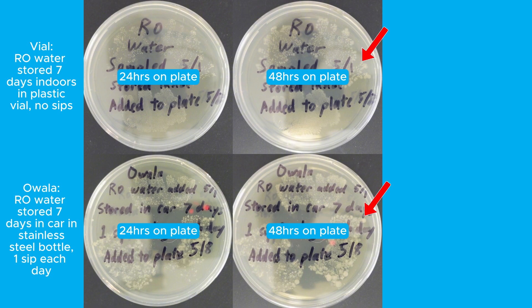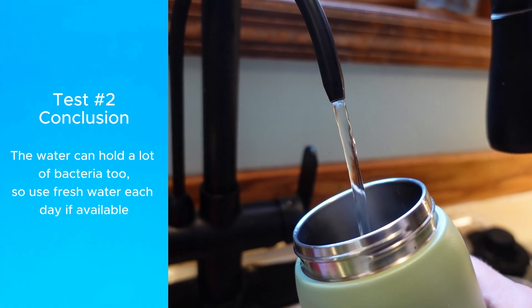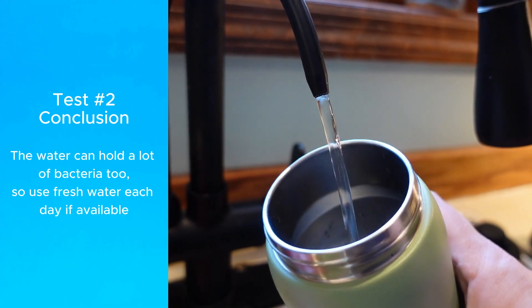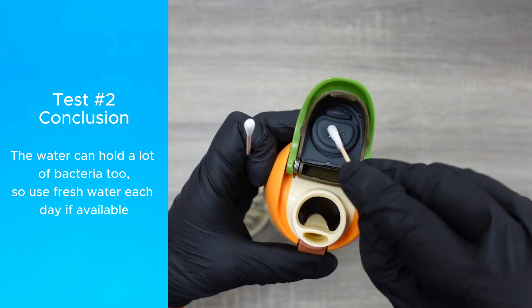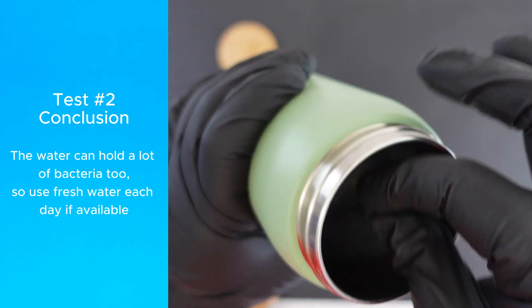After two days, the colonies on both samples had grown even more, but the Owalla was still a lot worse. Interestingly, on day three, they kind of look similar to how they did on day two, but the main takeaway is that the Owalla sample was always worse. This is why it's also a good idea to refill your bottle with fresh, clean water every day if you can, because it's not just the surfaces on the seals and the spout that build up bacteria, they can also exist in the water.